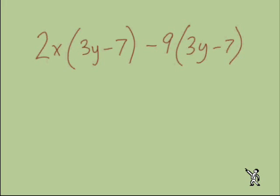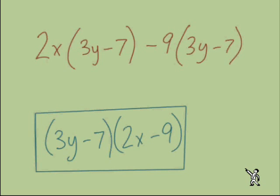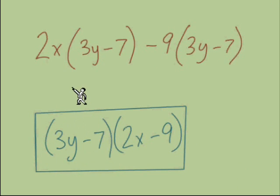Here's a quick one for you to try — pause the video, go back to the beginning of that example if you'd like, then work this problem out and come back for the answer. Both terms here have the quantity (3y minus 7) — that's our first factor in the solution. Then we have (2x minus 9) going into the second factor. That's how this expression is written in factored form.